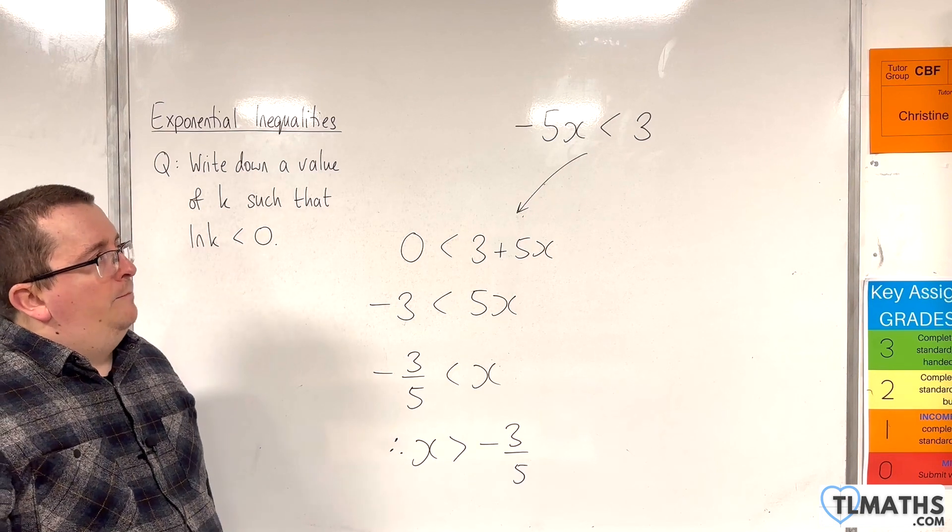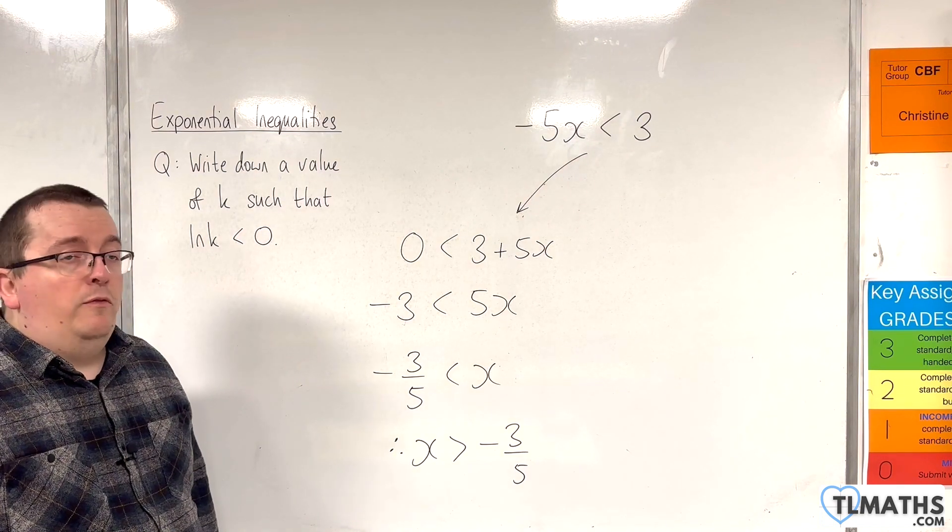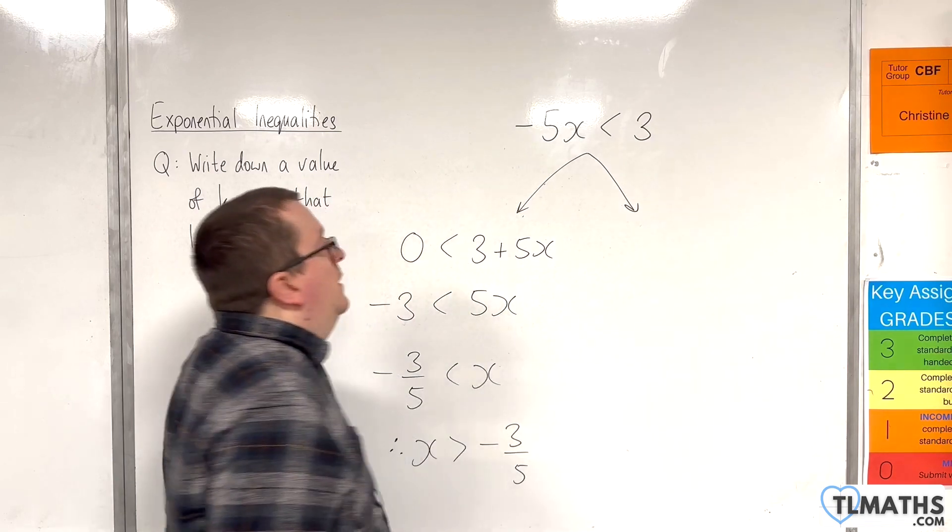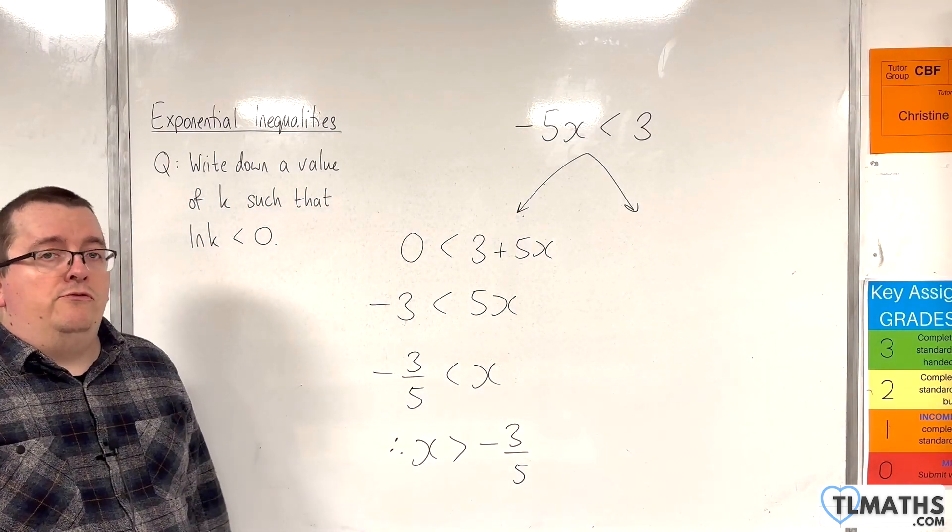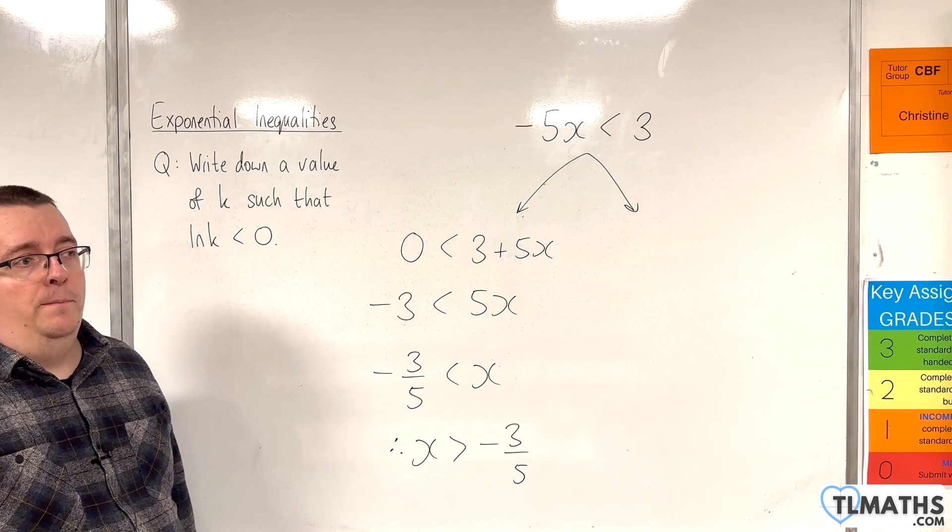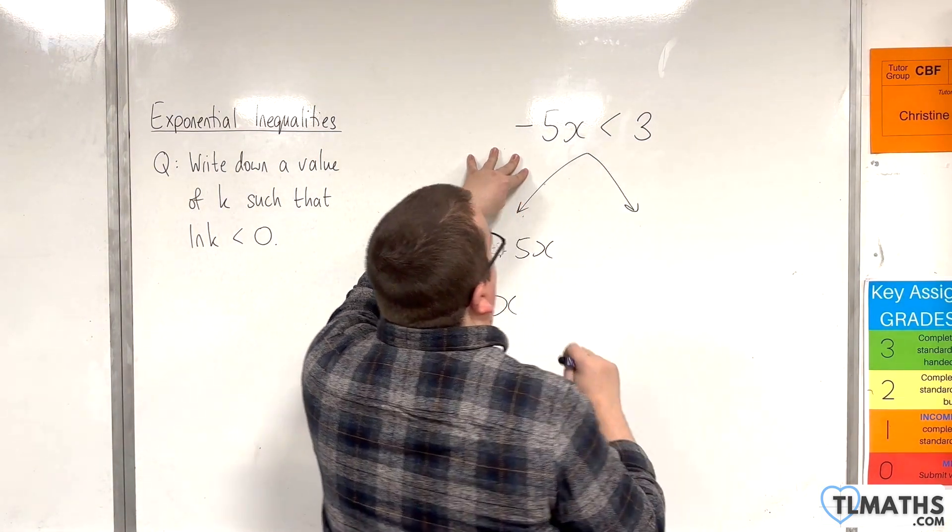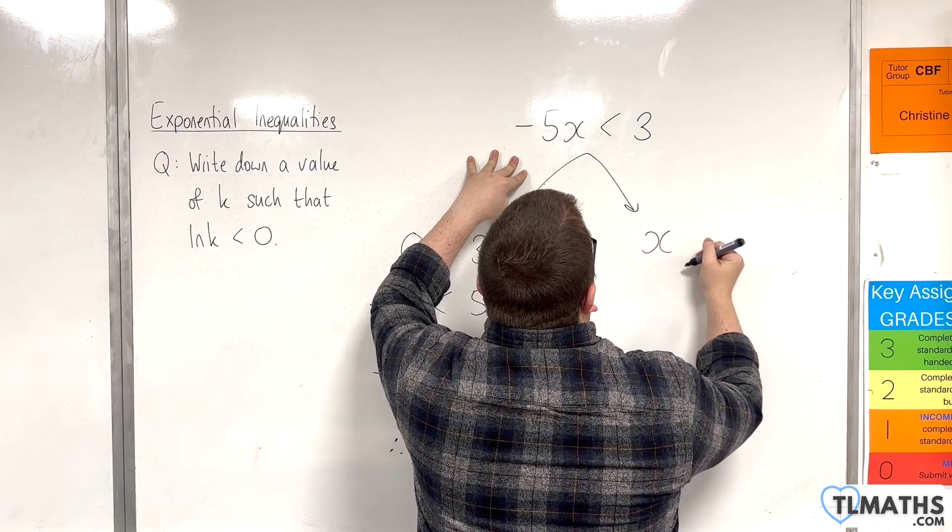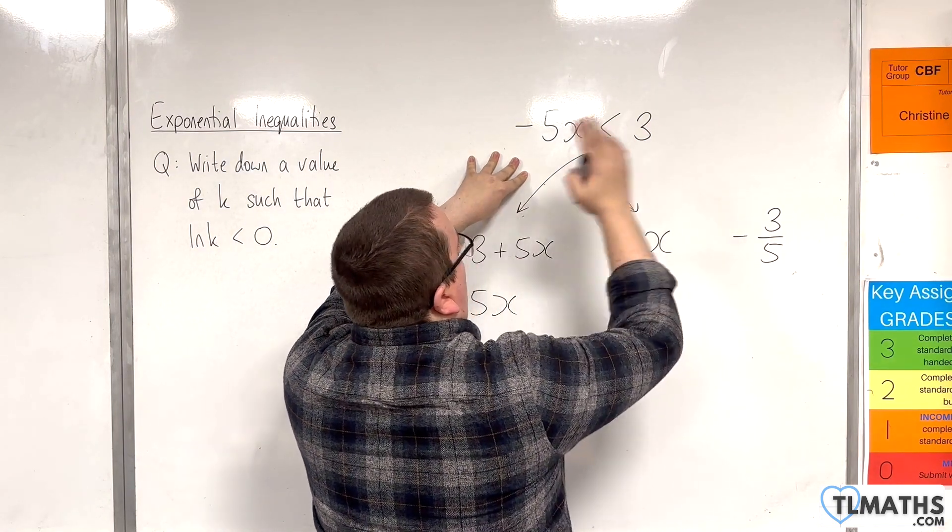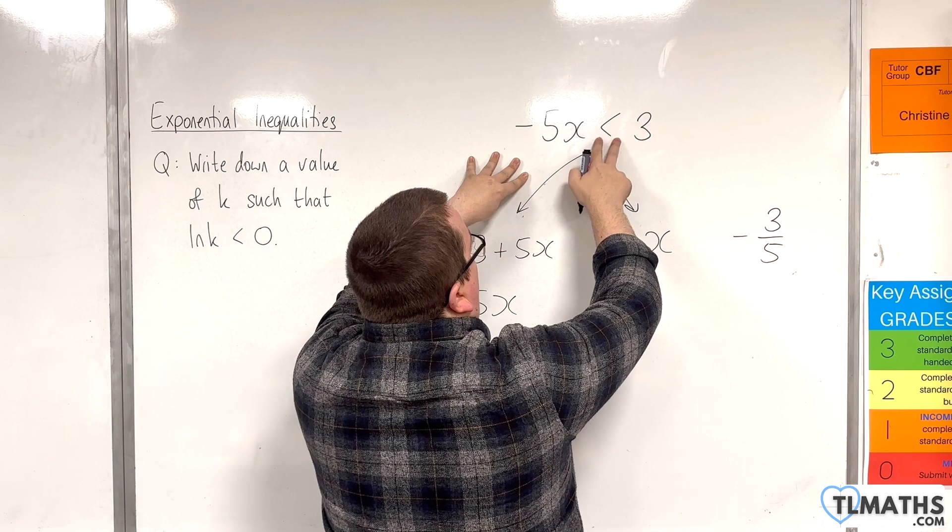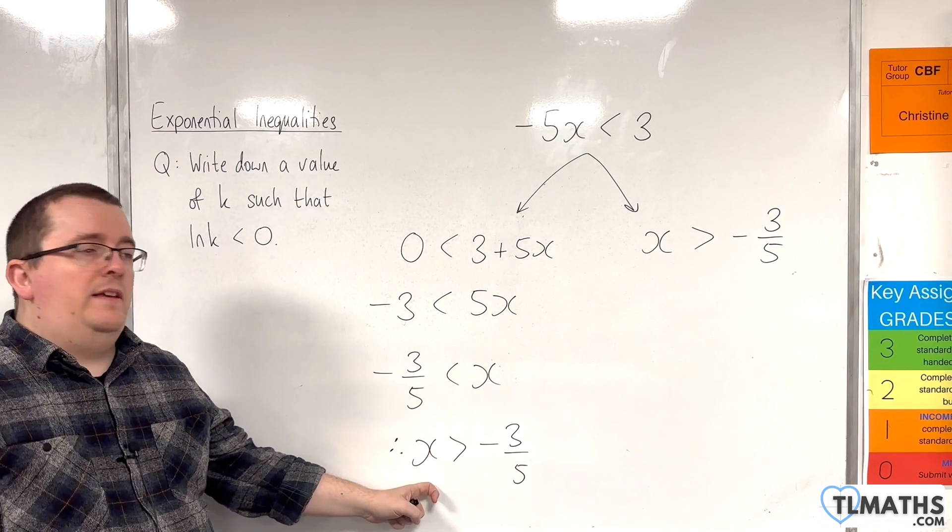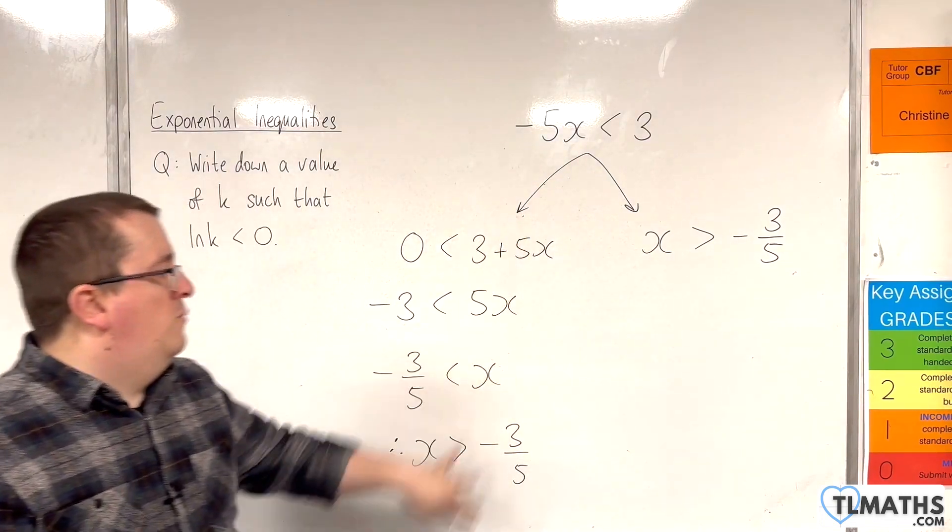Now, I could do it that way, and I have seen people coming up from GCSE that have been trained to do it that way. That haven't been taught that actually if you divide or multiply through by a negative number, then all that's going to happen is that it changes the direction of the inequality symbol. So, if I divide both sides by minus 5, I'm going to get x on the left-hand side minus 3 fifths on the right-hand side. But because I've divided through by a negative, this inequality symbol changes direction. And I get precisely the answer that I had there. So, you can actually do this in one step rather than several.